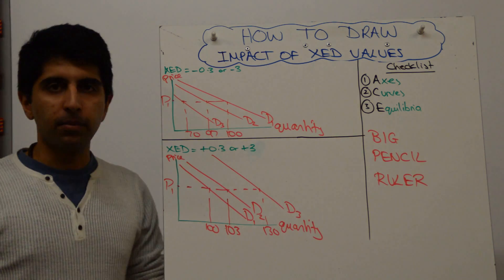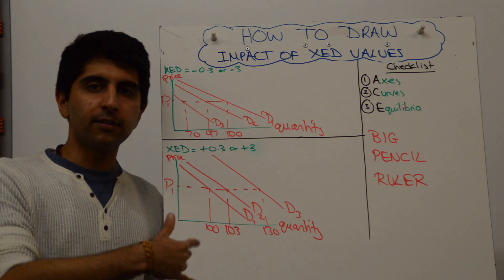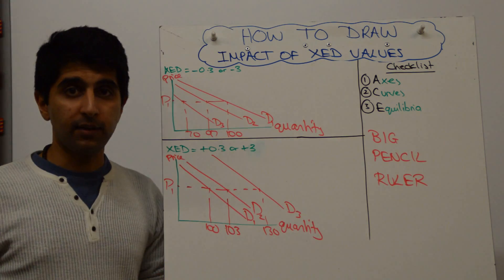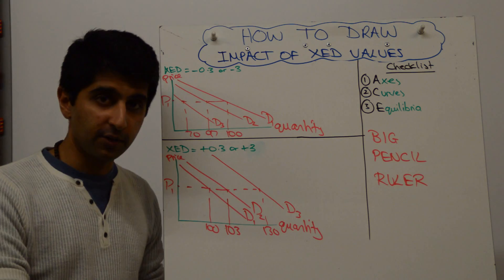So the technique here is very simple. You're showing shifts of demand, you're varying the size of the shift according to the XED value. The bigger the XED value, the bigger the shift.